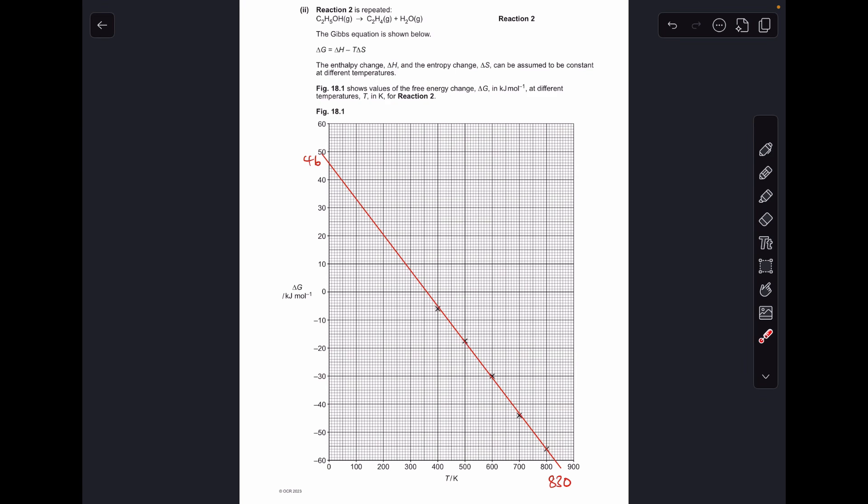So moving on to the last part, there's my line of best fit. I'm sure yours is very similar. I've cut the Y axis at 46 and I've cut the X axis at 830. So we've got to use this graph to calculate the entropy change delta S, the minimum temperature of the reaction becomes feasible, and we've got to calculate the enthalpy change delta H. So I'm going to do all of this on the graph.